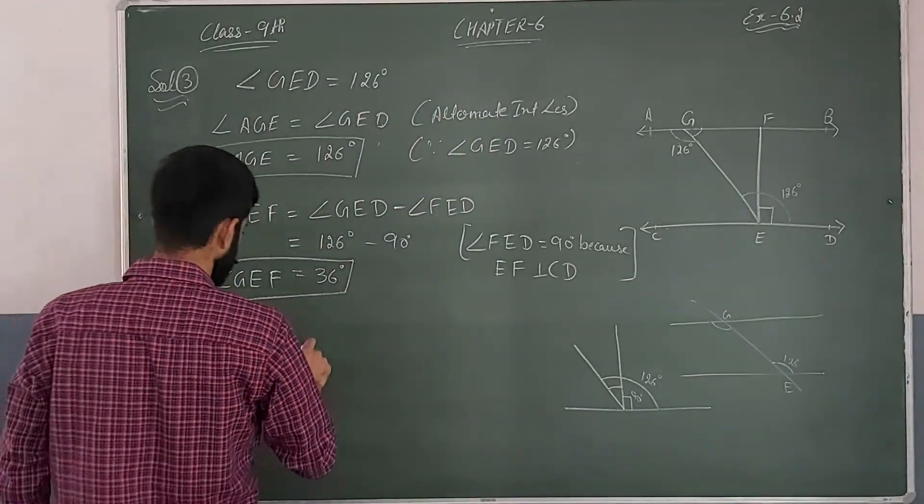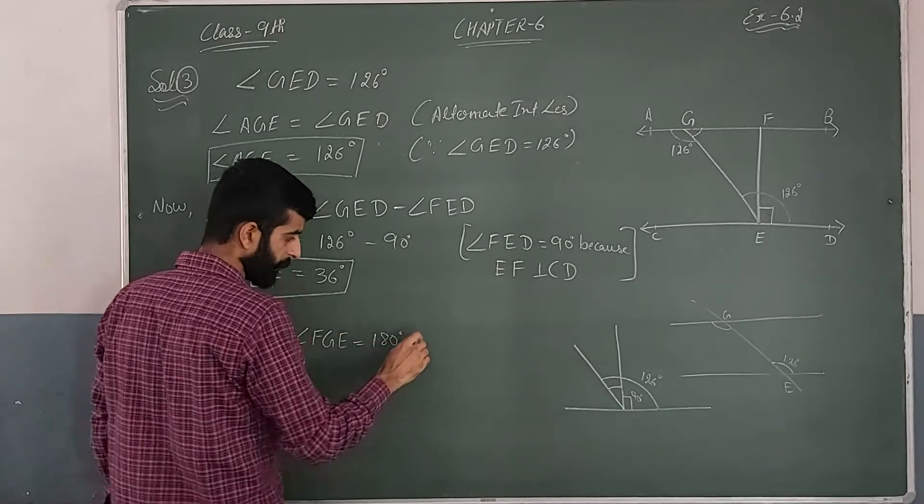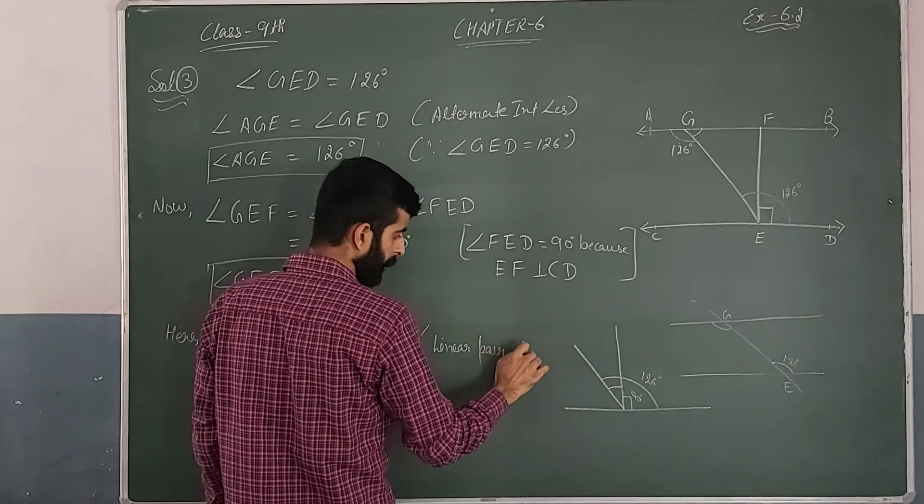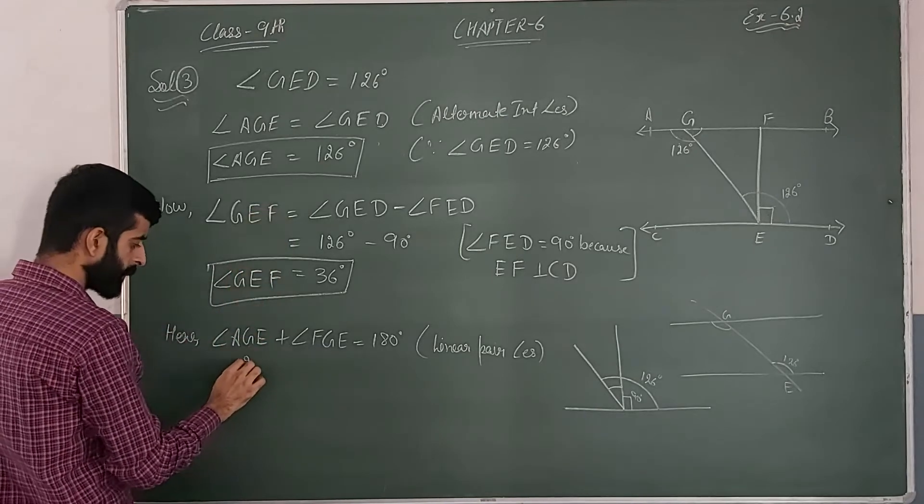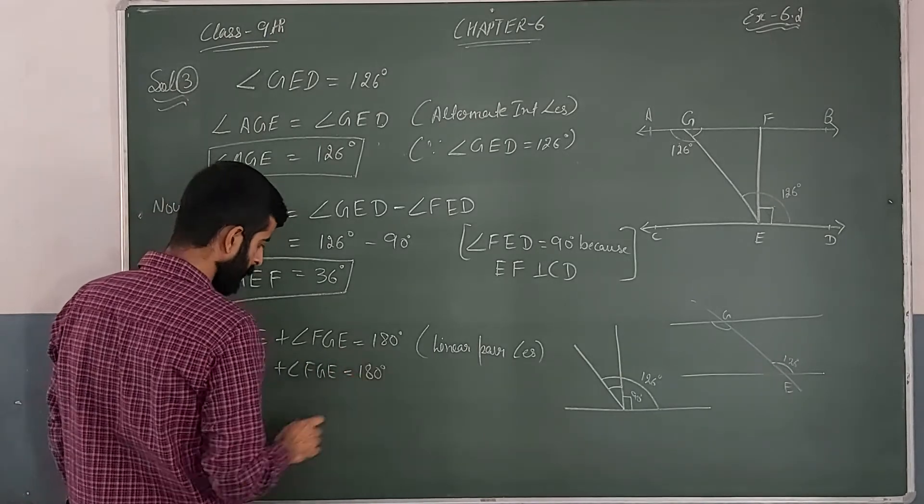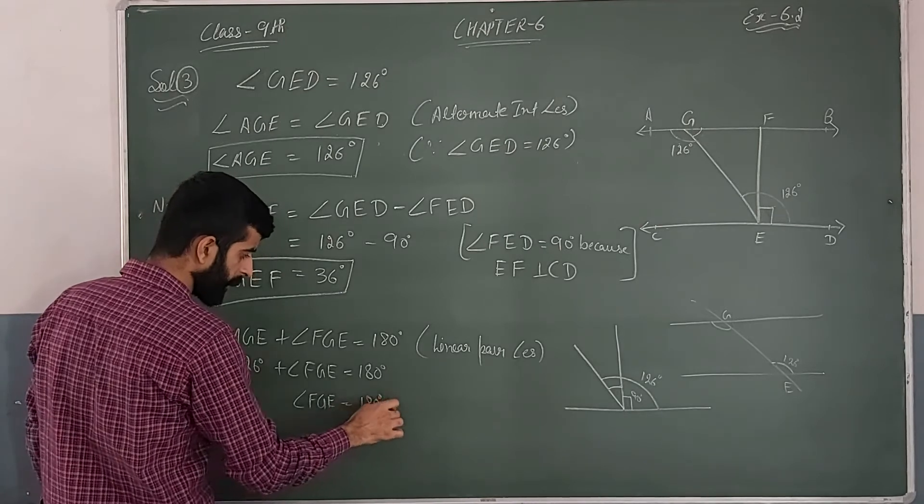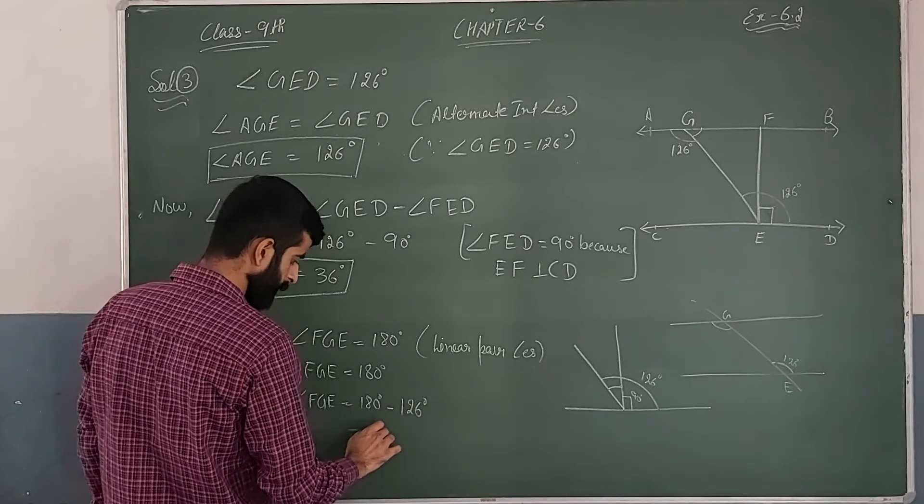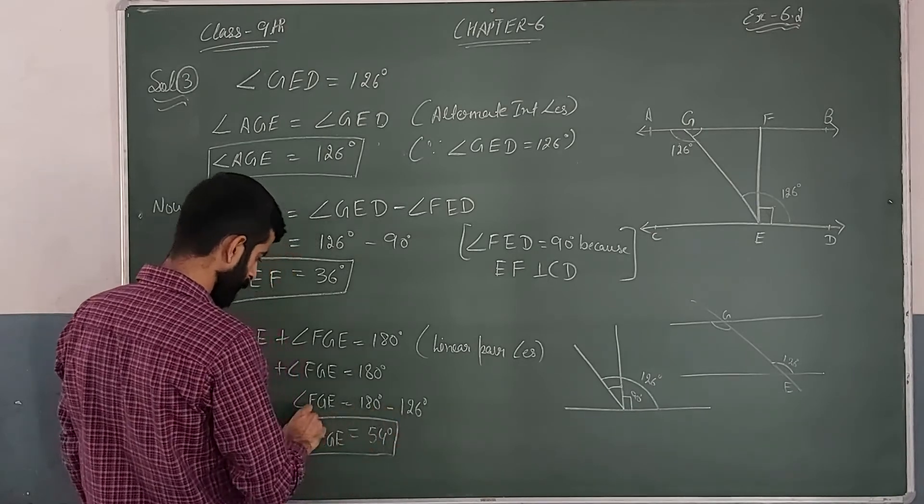Angle AGE equals 126 degrees. Last angle FGE is equal to 90 degrees. Here angle FGE, AGE is equal to 90 degrees. Angle FGE, angle AGE is higher.